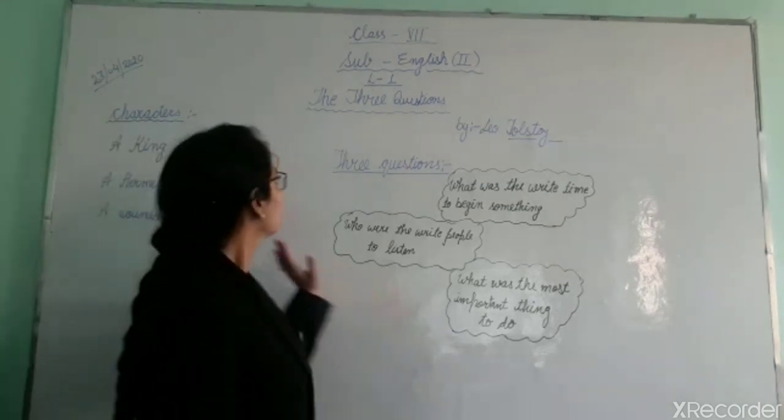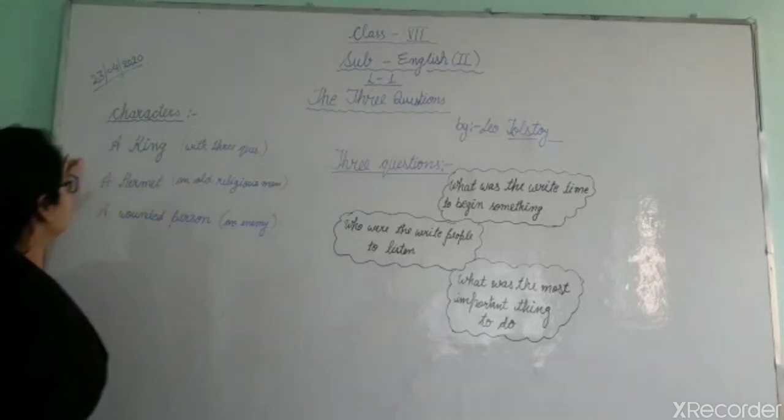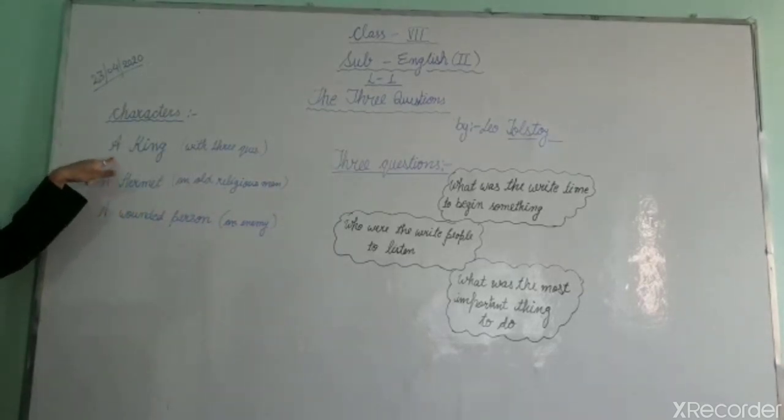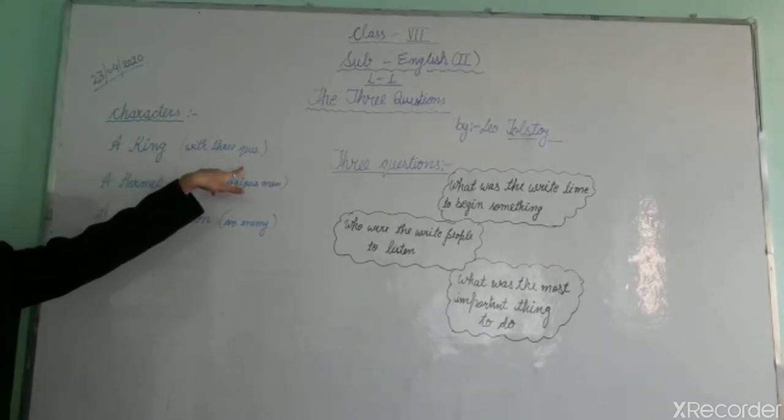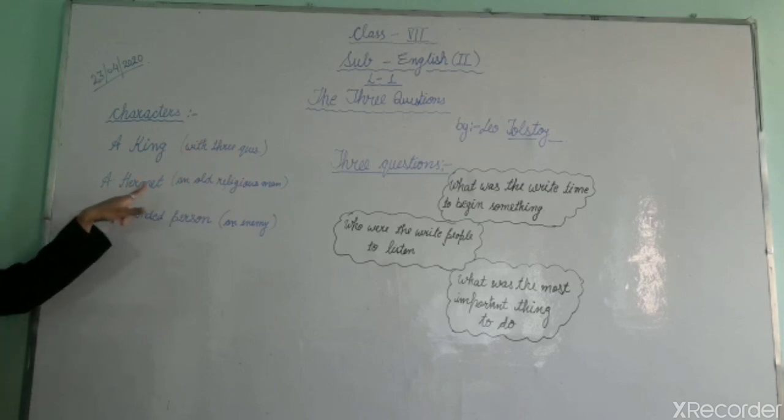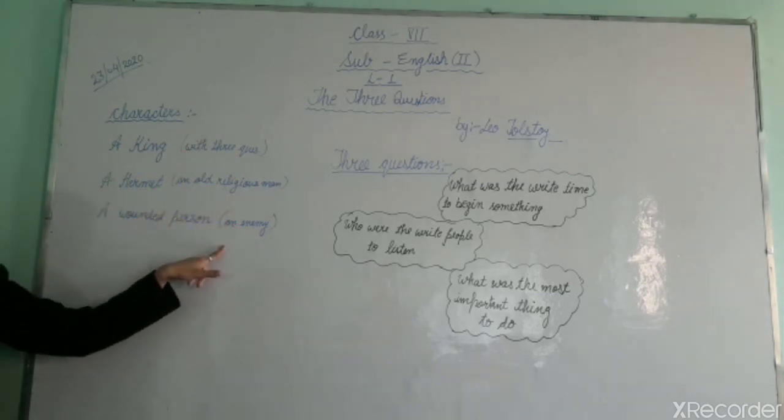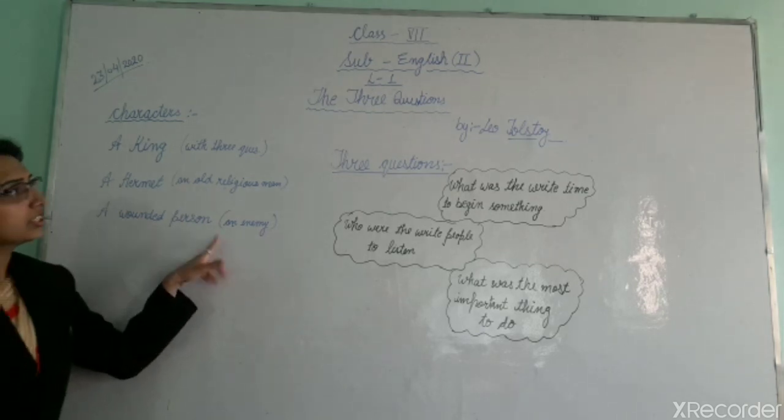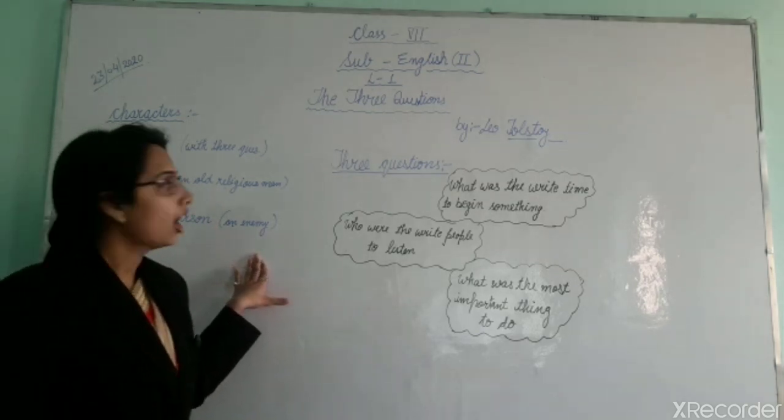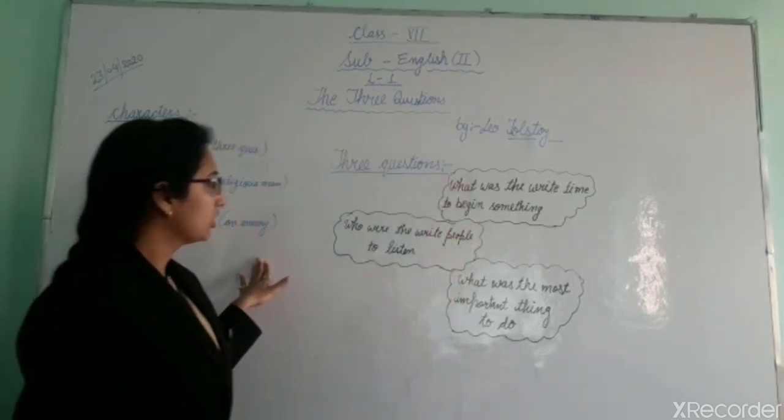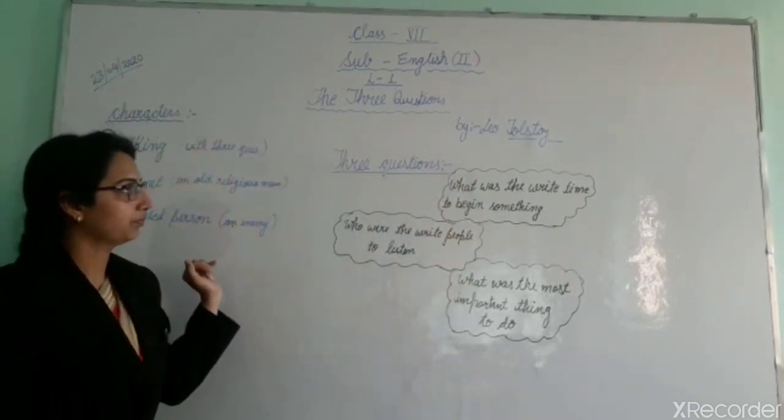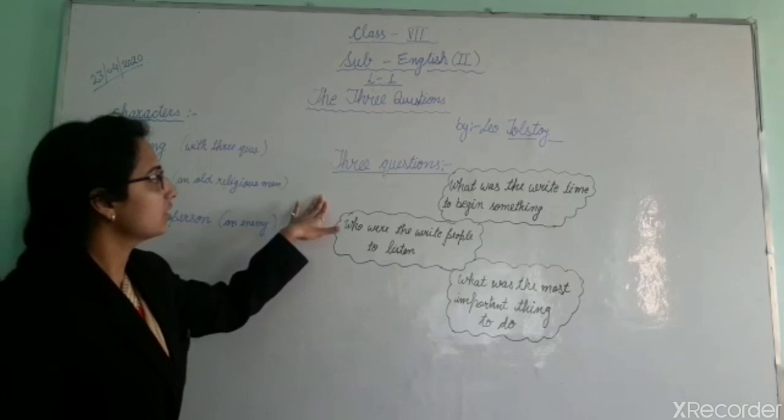In this story, there are three main characters: a king with three questions, a hermit (an old religious man), and a wounded person who is an enemy. This story revolves around the life of a king with his three questions.